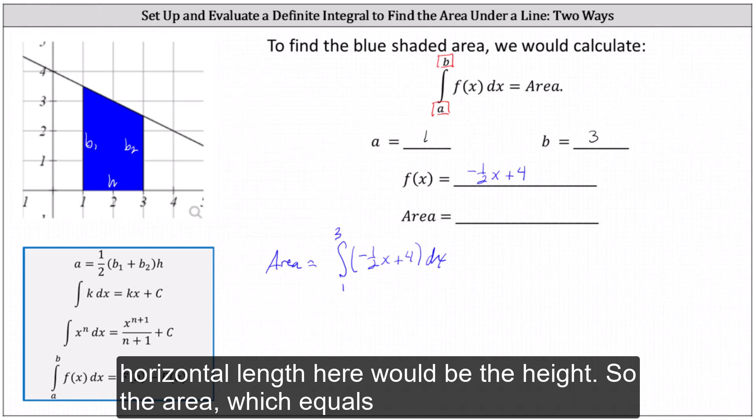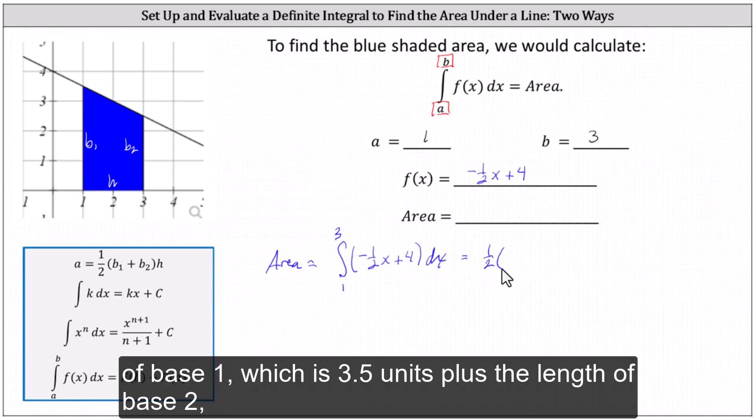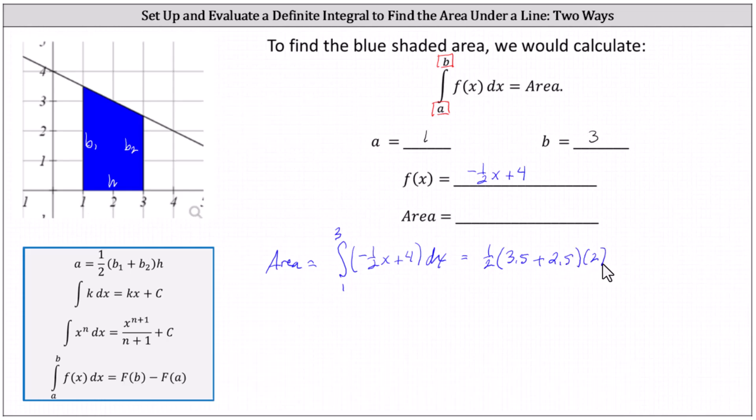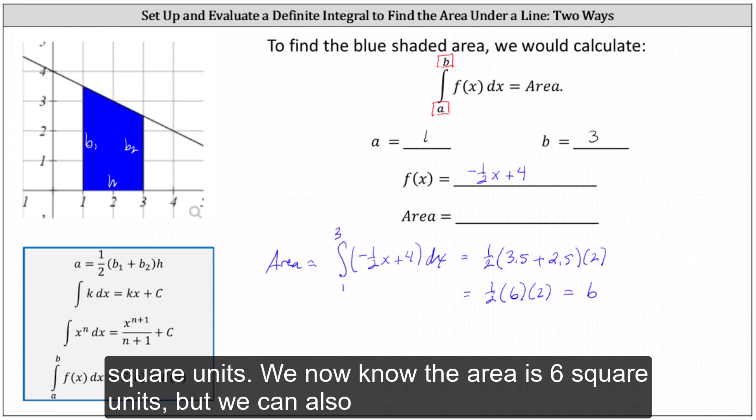So the area, which equals the definite integral, is equal to one-half times the length of base one, which is 3.5 units, plus the length of base two, which is 2.5 units, times the height, which is 2 units. Simplifying, we have one-half times 6 times 2, which equals 6 square units. We now know the area is 6 square units.